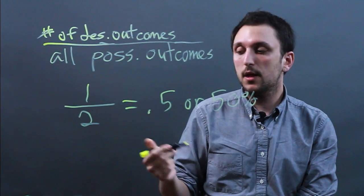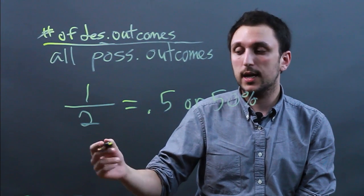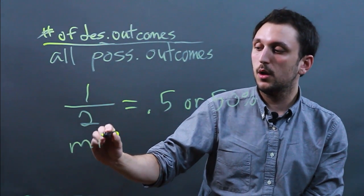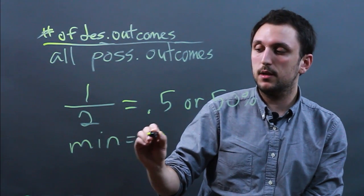When you're dealing with probability, the minimum probability that you can get is zero. So, the minimum is zero.